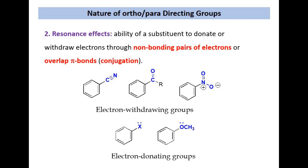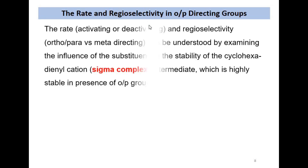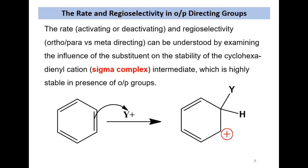We will now discuss the reduced activity in ortho-para directing groups. This can be understood by examining the sigma complex intermediate, also called the arenium ion, which is very important. The arenium ion is formed when benzene combines with an electrophile. The electrophile picks up electrons from the ring, causing an electron-deficient position in the ring. This electron-deficient position is later compensated by the sigma electron of the hydrogen atom, restoring the aromatic character.